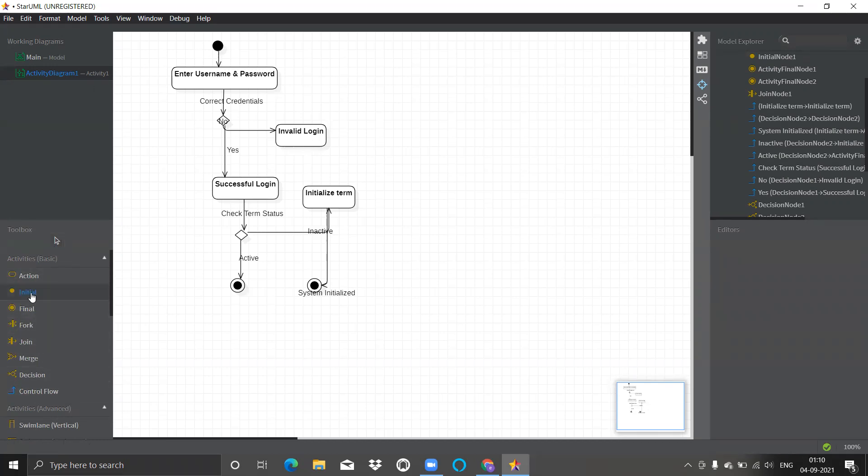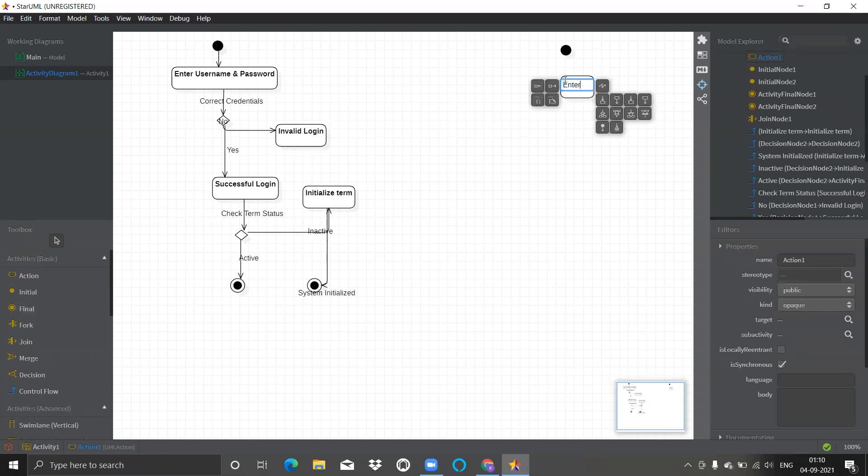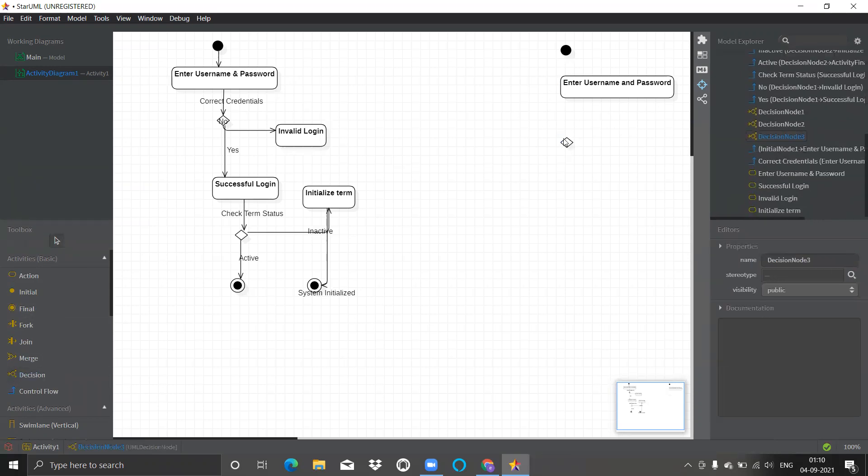Let's begin with the start symbol. For start, initial is there. I'll just click on it and I'll just click at the place where I want this. After that one action is there. Let's get one action. The action name is enter username and password. My action is ready.